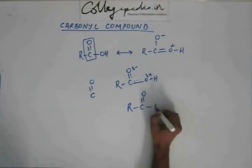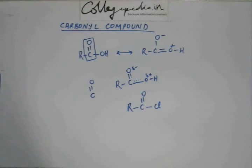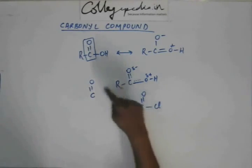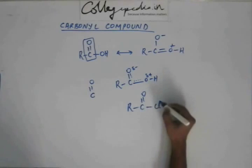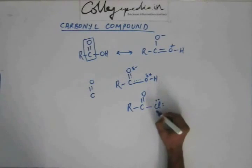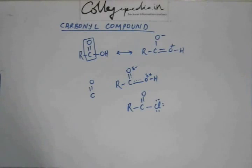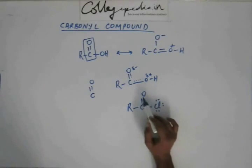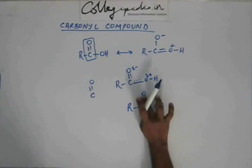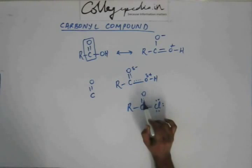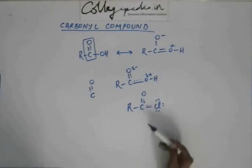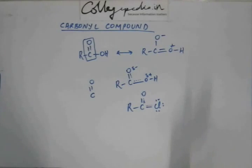Similarly, we can extend the same idea to acyl chlorides. Instead of OH, we have a Cl group. This Cl group has three lone pairs of electrons, and those electrons will be involved in resonance. So there will be some partial double bond character at both positions, meaning there is not a pure C double bond O — so acyl chloride is also not a carbonyl compound.